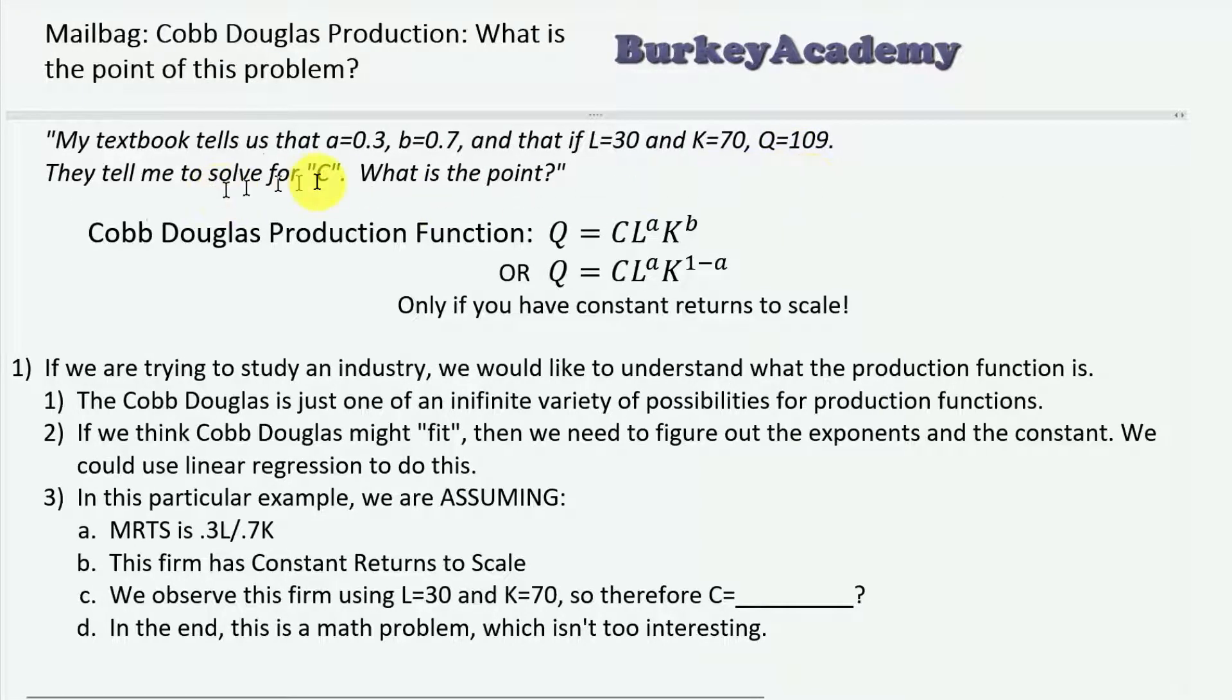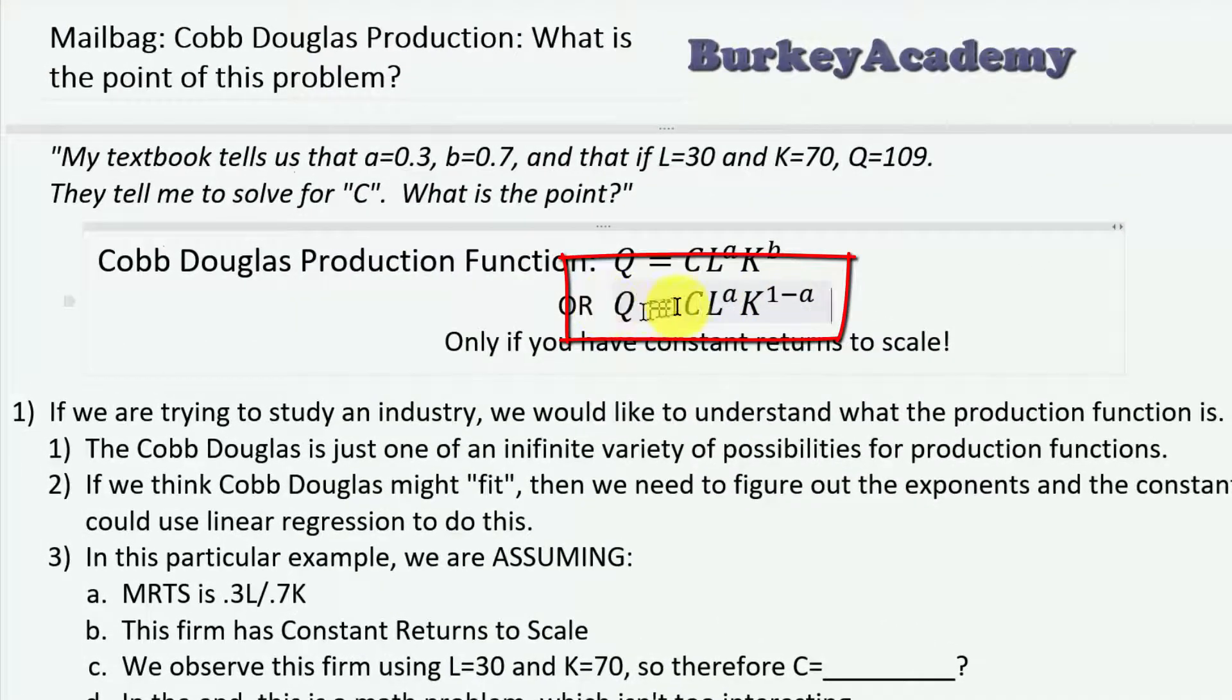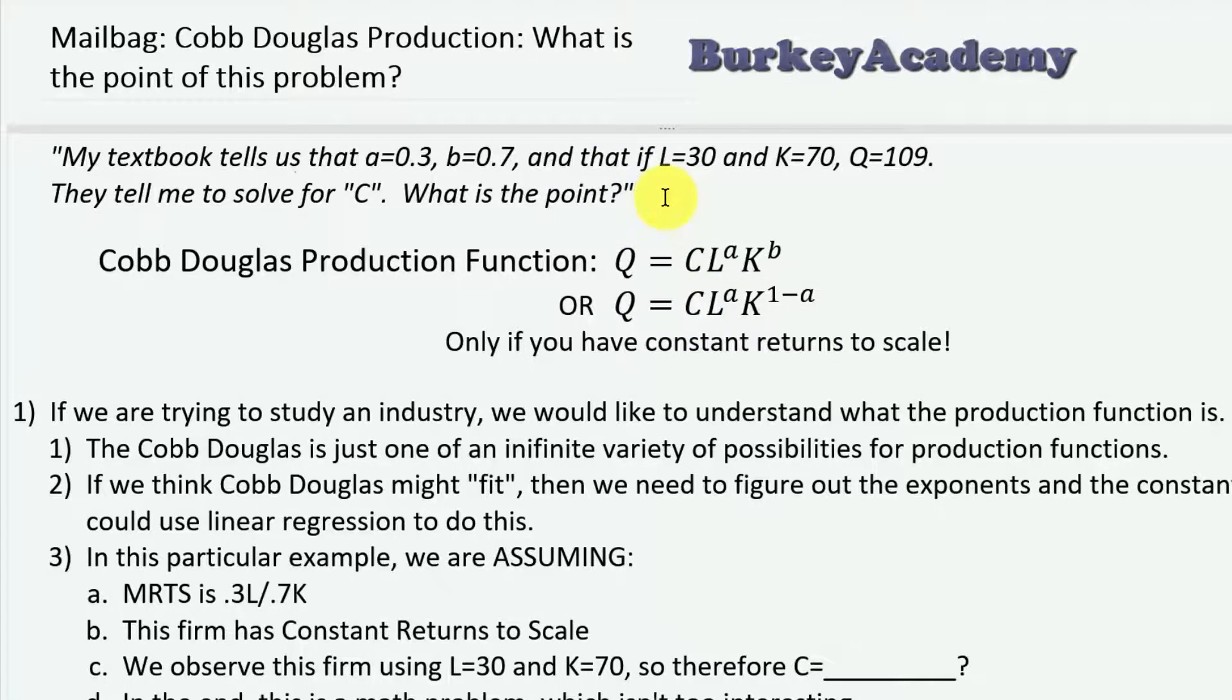They tell him to solve for the constant. If we look at this Cobb-Douglas function, Q = C·L^a·K^(1-a), they're asking him to solve for C. Just plug in 30 for L, 70 for K, and 0.3 is the exponent on labor and 0.7 is the exponent on capital. Solve for C, and this viewer asks what's the point. Good question, let's talk about this.